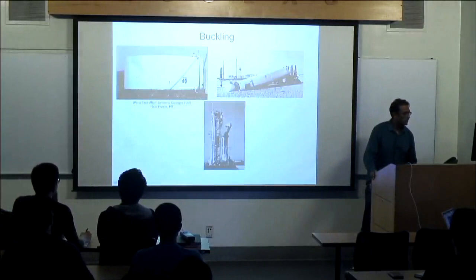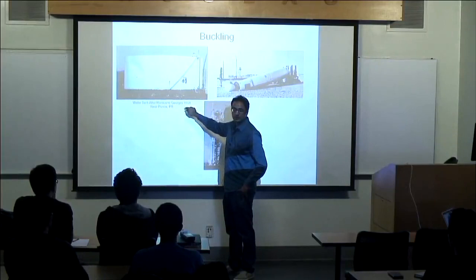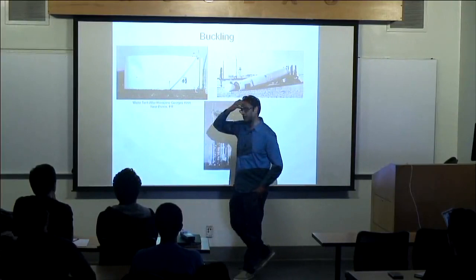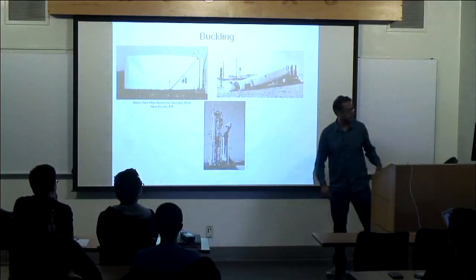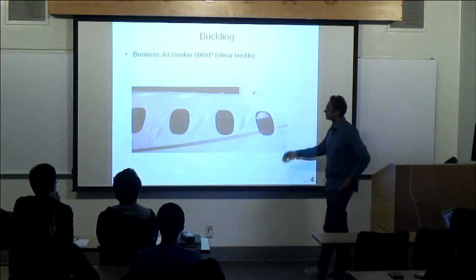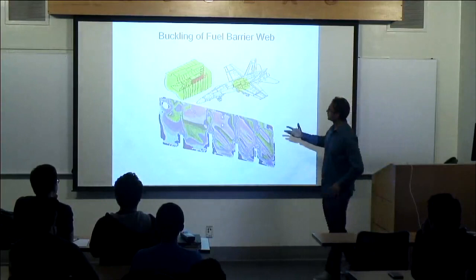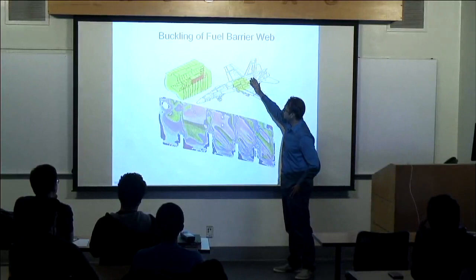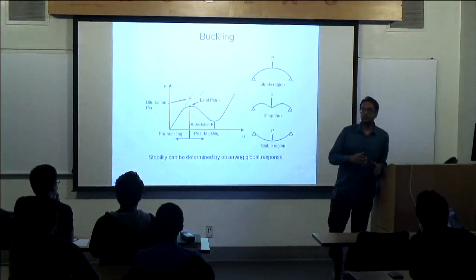Here are examples — I grew up in Puerto Rico, and a water tank buckled during a hurricane in 1998 because the winds were so large it collapsed the tank. Here are examples of launch vehicles that have experienced buckling. Here is a jet with shear buckles visible in the wall of the aircraft. There was also an aircraft being designed so that the fuel barrier webs did not buckle — they found those shear webs needed careful examination. When buckling happens, it can happen in a stable or unstable manner.